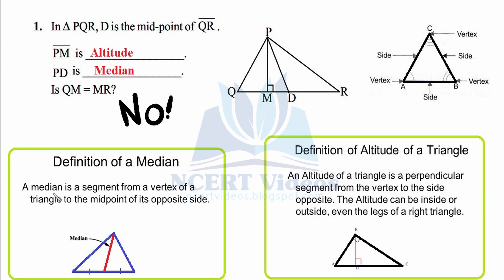A median is a segment from a vertex of a triangle to the midpoint of its opposite side. To construct a median, first find the midpoint of any side — you have learned how to find a midpoint in the geometrical ideas chapter — then join that midpoint to the opposite vertex.